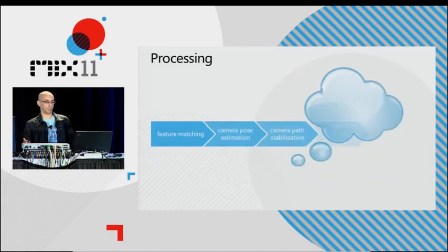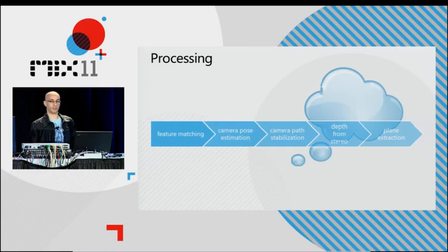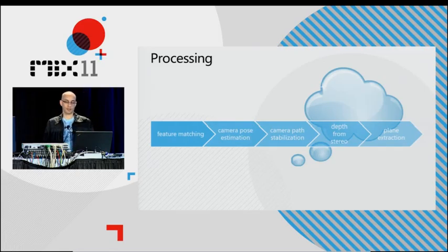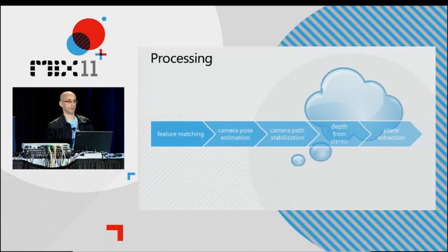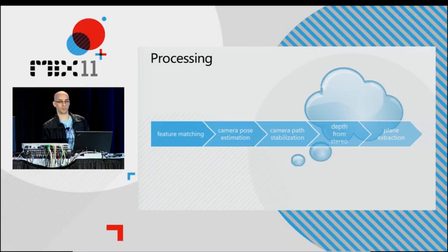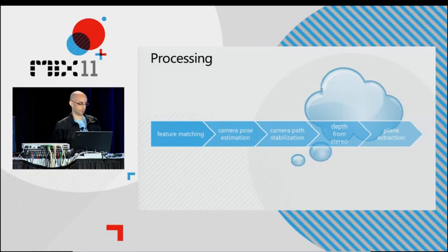The next thing that happens with the photos is we process them in the cloud on a server. It consists of five steps that I'll go over in a little more detail, but first I want to mention that it only takes about a minute for a dozen photos, maybe three or four minutes to do a full 360, so it's relatively inexpensive. We see opportunities for improving that performance as we parallelize the algorithms and move it to Azure.